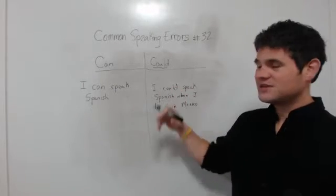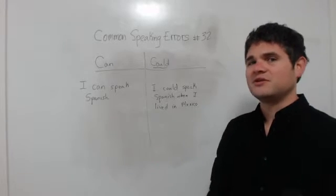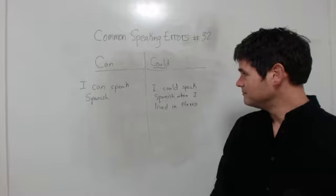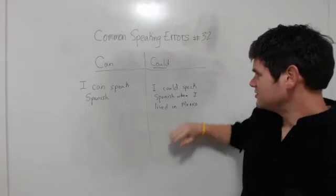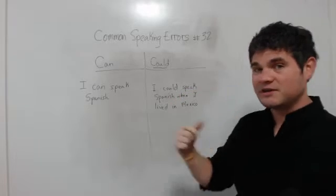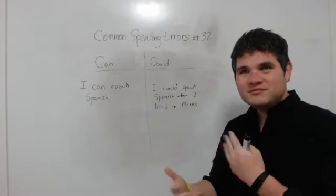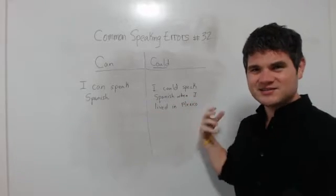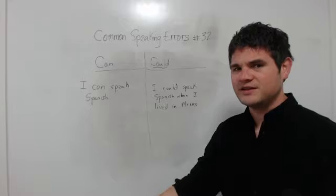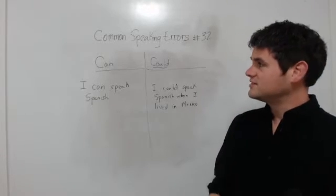So when you're using could, you do kind of want to establish the context. You don't always have to, but just to give the listener some more information. Just like saying I could speak Spanish - when was it? That's when you want to give the context, like when I lived in Mexico.